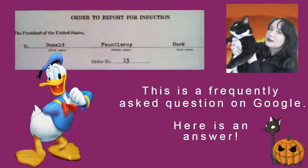However, it wasn't until the 1943 cartoon Donald Gets Drafted that we learned the character's real name. A close-up of Donald's draft card reveals his full name as Donald Fundalroy Duck, Fundalroy being his middle name.